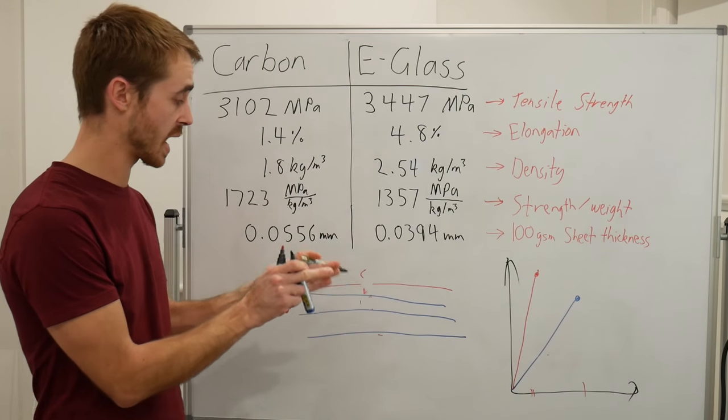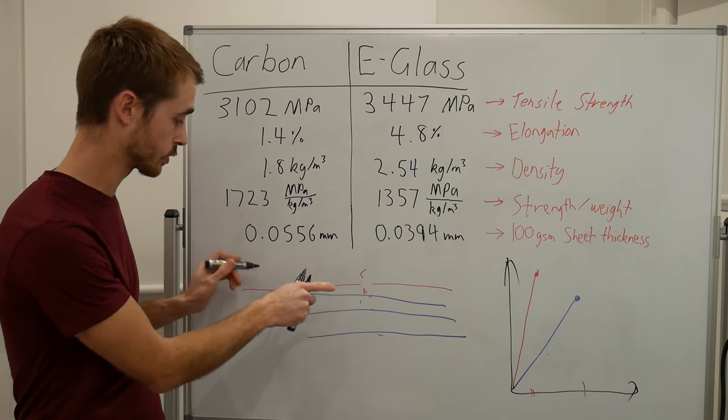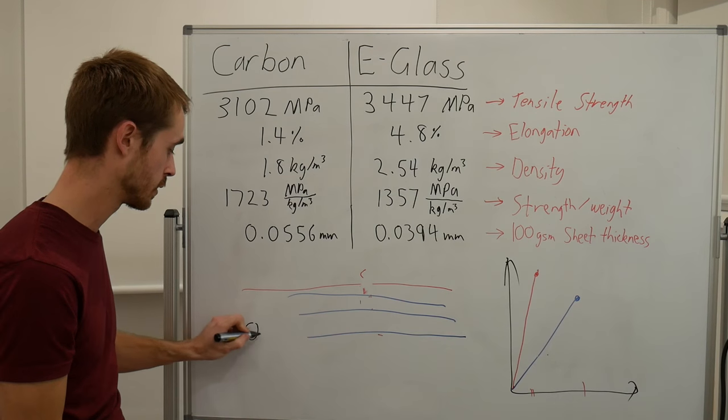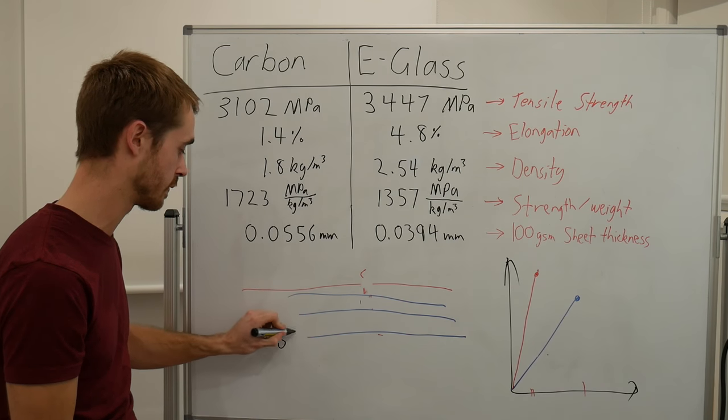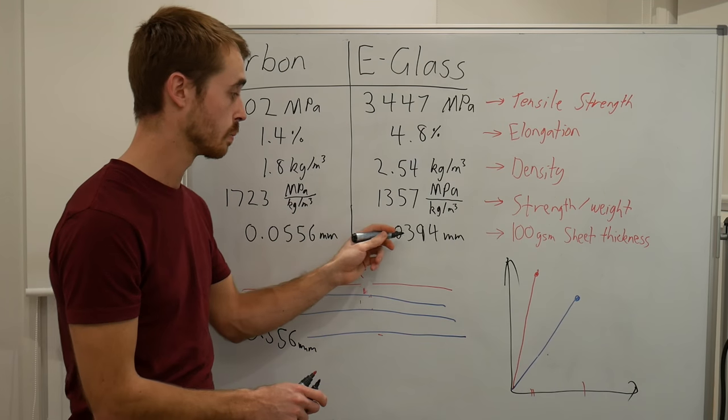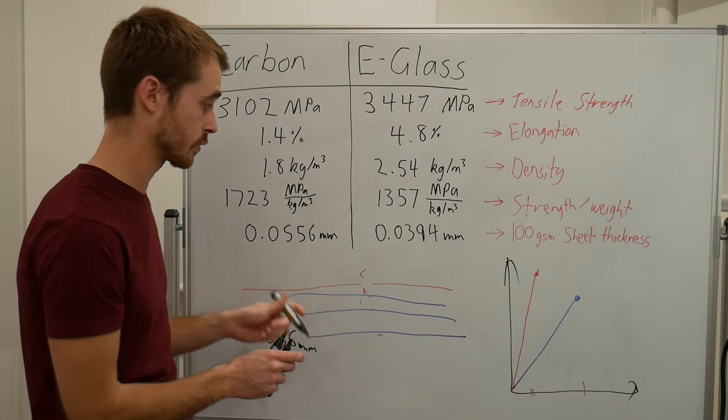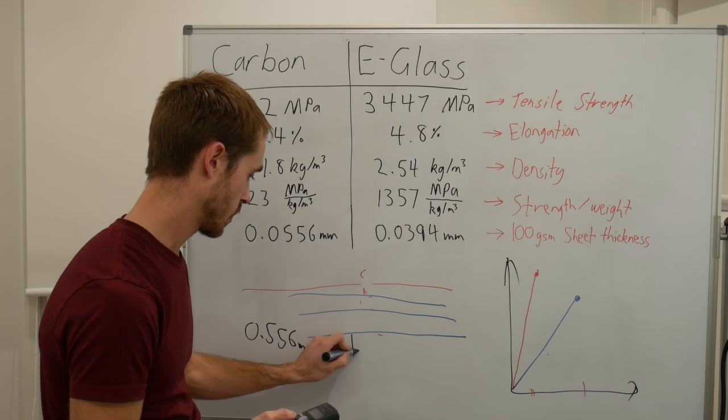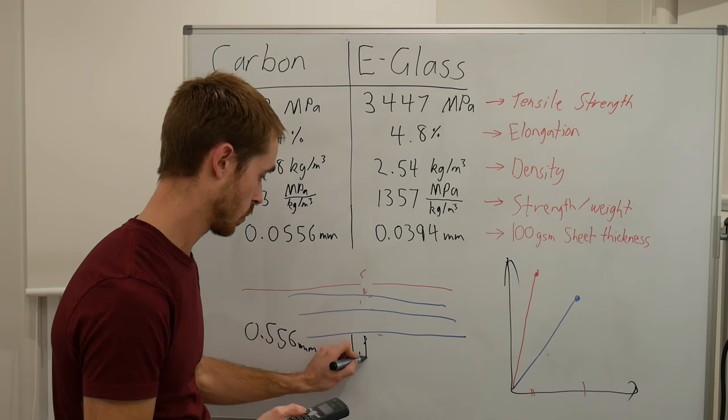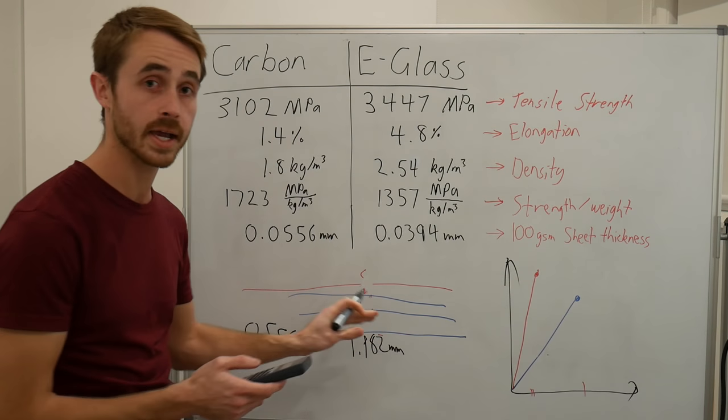Running some numbers, let's say we have a 10 millimeter wide area. We multiply that by 10 to get our total area of carbon - 0.556 millimeters of carbon. Then we multiply our fiberglass by 10 and by 3, giving us 1.182 millimeters of actual fiberglass.